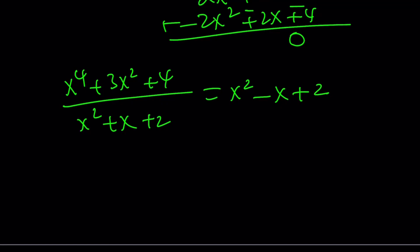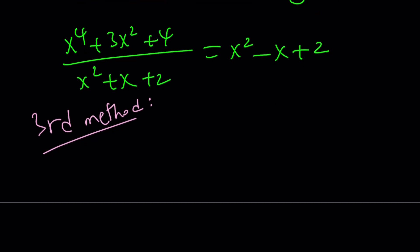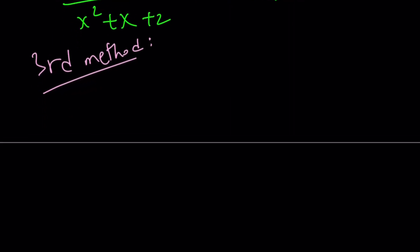And obviously, almost all the time, if there are three methods, the third method is usually the easier one or it involves a trick. So, how do we simplify this? Since the top is divisible by the bottom, why not try to factor x to the 4th plus 3x squared plus 4? That's a really nice polynomial, by the way.